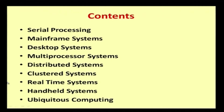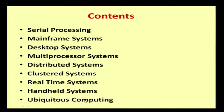This is part of unit one. As contents, we will be seeing: one, serial processing; two, mainframe systems; three, desktop systems; four, multiprocessor systems; five, distributed systems; six, clustered systems; seven, real time systems; eight, handheld systems; and nine, ubiquitous computing.